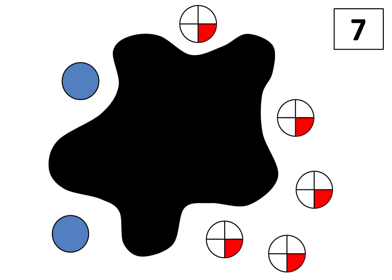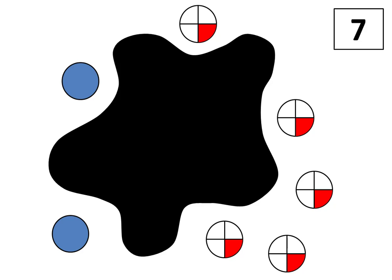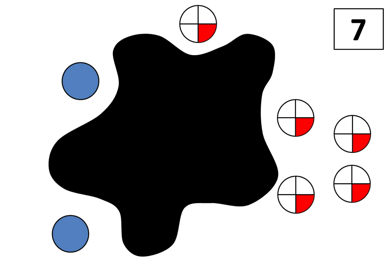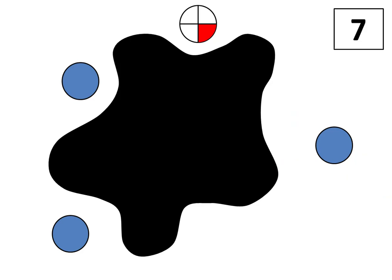Solution number one focuses on counting. Looking at the shapes outside the splat, I see whole circles and images that each represent one-fourth. To begin, I'll think of four-fourths as one whole. Since the total is seven and I can see three and one-fourth, I'll count up from three and one-fourth to seven.